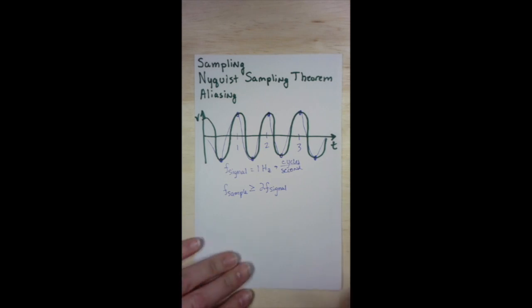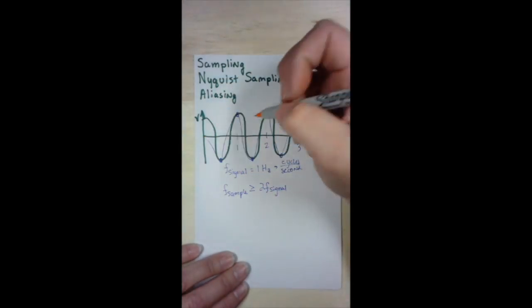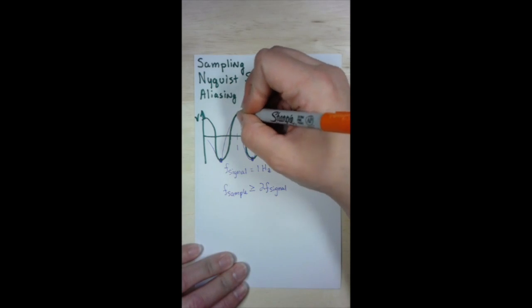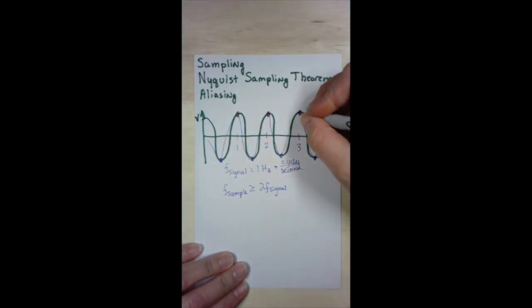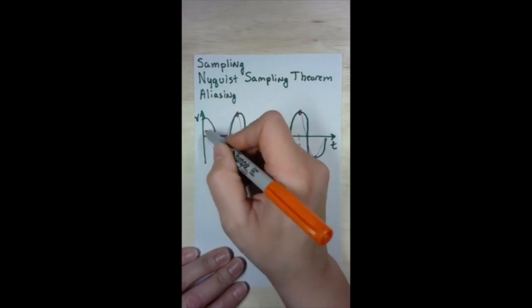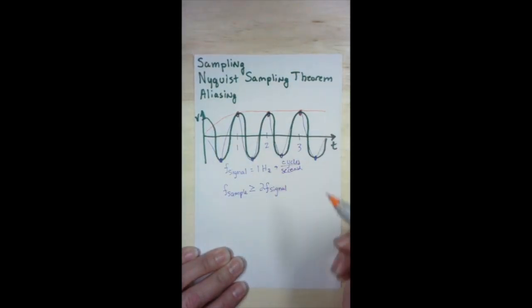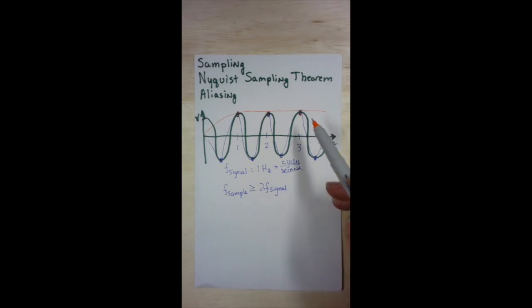So now we're going to take a look at what happens if we sample at the same rate as the signal itself. That means one time per second. So if we take a sample once per second, that's where we take the samples. And when we reconstruct the signal, it'll look like this. And you can see that does not represent the actual signal. This is called aliasing. Aliasing can be defined by sampling at a lower rate than two times the frequency of the signal, giving us an improper signal.